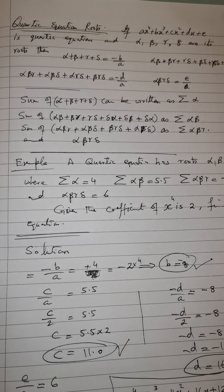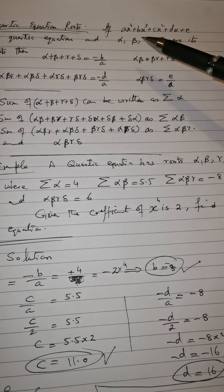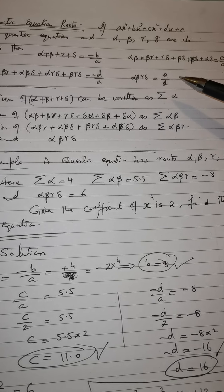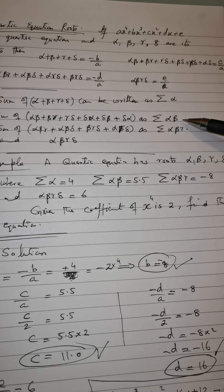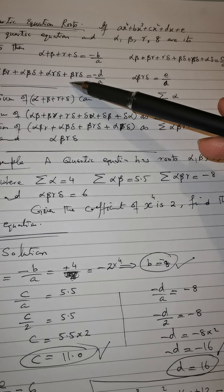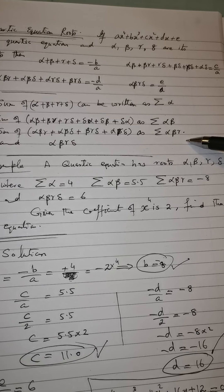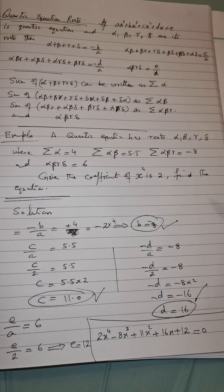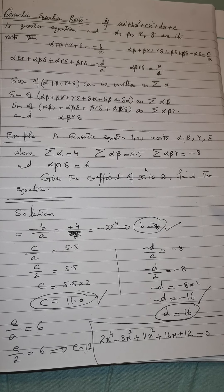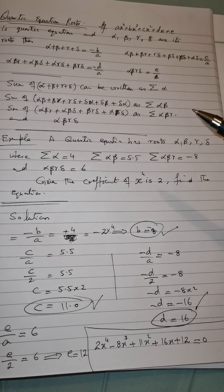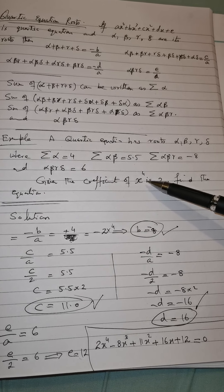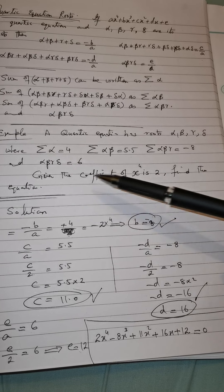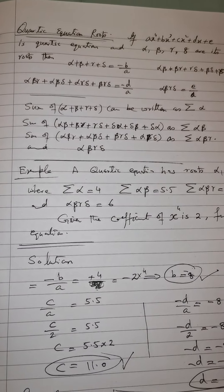To summarize: we have the four roots and their formulas expressed as Σα, Σαβ, Σαβγ, and αβγδ. In this example, since the coefficient of x⁴ is given as 2 (so a = 2), we can use this value in each formula to easily find b, c, d, and e and hence determine the quartic equation.